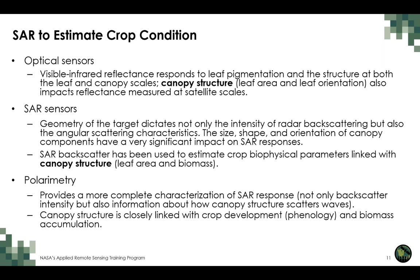In this webinar we are using polarimetric data because it provides a more complete scattering characterization of the radar response — not only the amount of energy scattered back to the satellite, but also information about how the canopy structures those scattered waves. Canopy structure is closely related to crop development, including phenology and biomass, which is why polarimetric data is very useful for detecting crop growth and biomass accumulation.